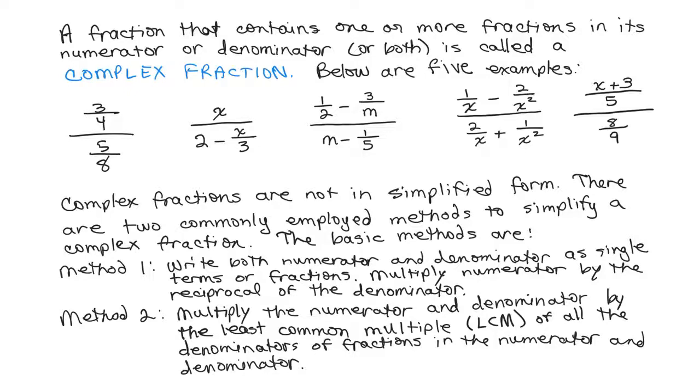A fraction that contains one or more fractions in either its numerator or denominator or both is called a complex fraction. Below are five examples. The first example, we have three-fourths over five-eighths, so it has a fraction in the numerator and a fraction in the denominator.